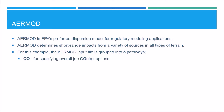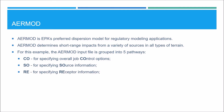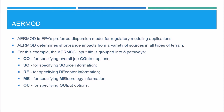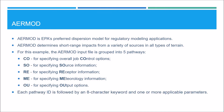The source pathway is where you specify the source information. The receptor pathway is where you specify the receptor information. The meteorological pathway is where you specify the meteorology options. And the output pathway is where you specify the output options. Each line must start with the two-character pathway ID shown here. Each pathway ID is followed by an eight-character keyword and one or more applicable parameters. The AirMod input file for the example run is named EX1-PM25.INP.